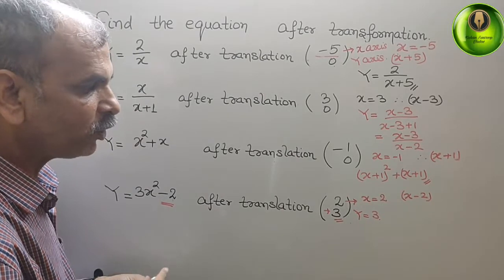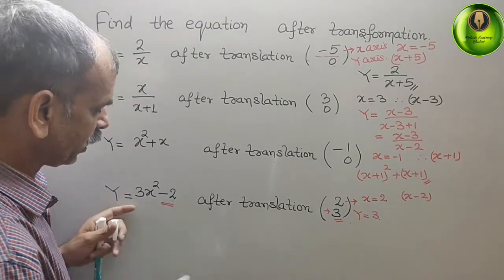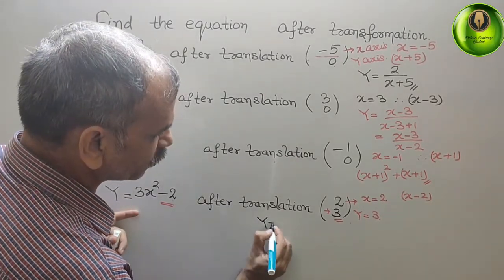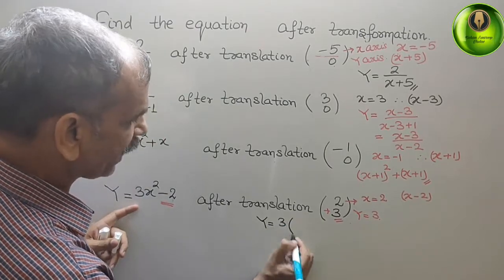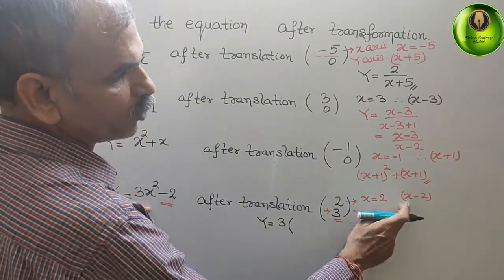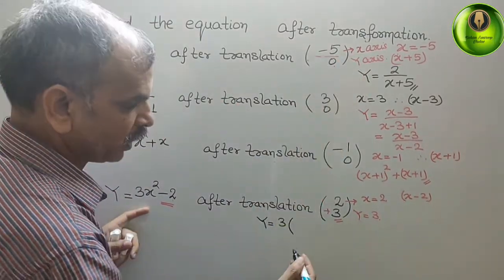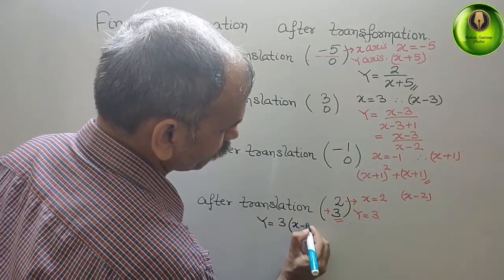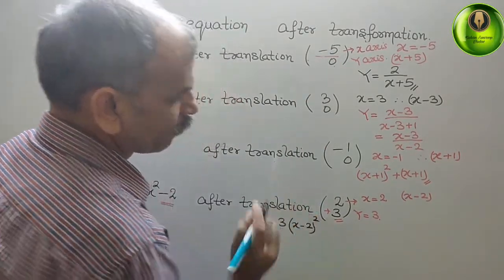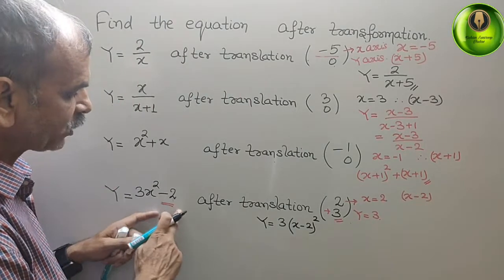Therefore, what we will do here? Just we have to keep y equals 3. And in place of x squared, we have to put x minus 2 whole squared. And minus 2 is here.